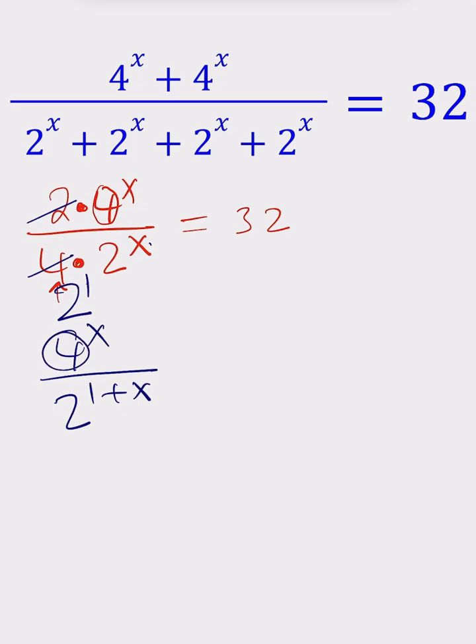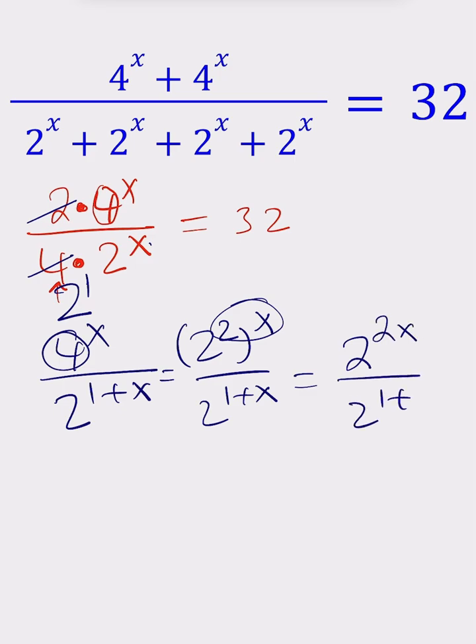But 4 is 2^2, so this is going to be (2^2)^x, which you can simplify again. Now the exponents are multiplied. You get 2^(2x) divided by 2^(1+x).